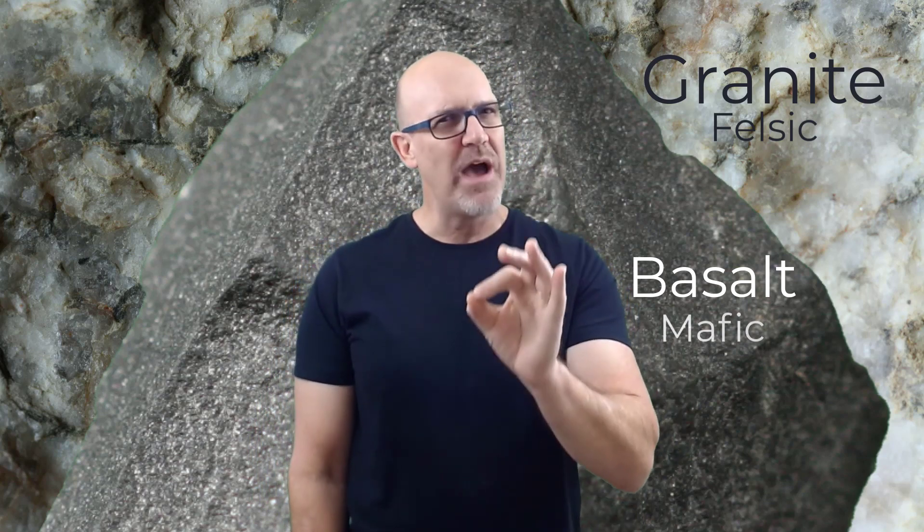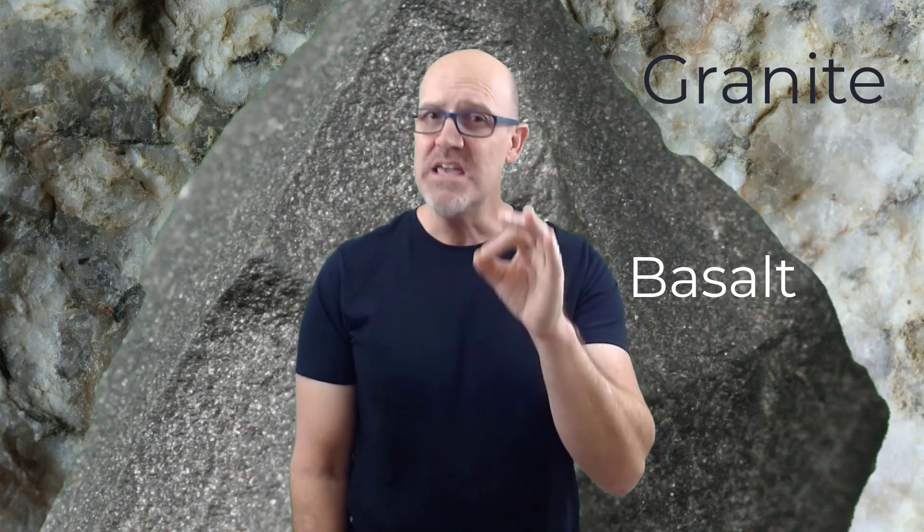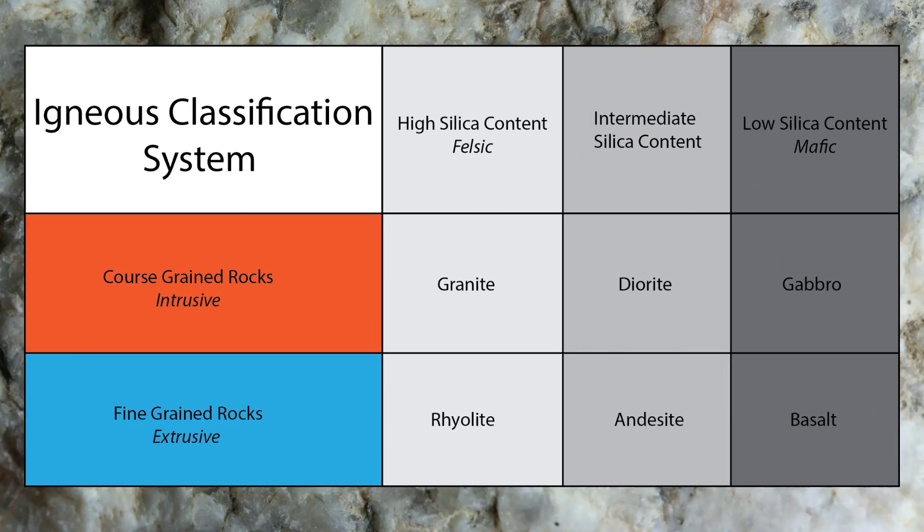It turns out that along with crystal size, silica content is another way of classifying igneous rocks. These two characteristics allow geologists to make simple charts like this, to help them teach their students about the six basic kinds of igneous rocks. Notice that on the left, we have rocks with crystals that we can see with the unaided eye like granite, and remember these are called intrusive igneous rocks.